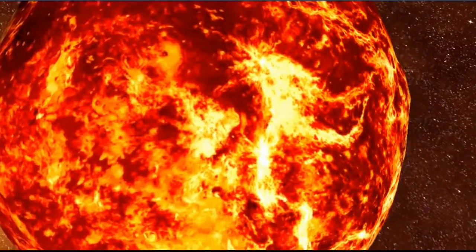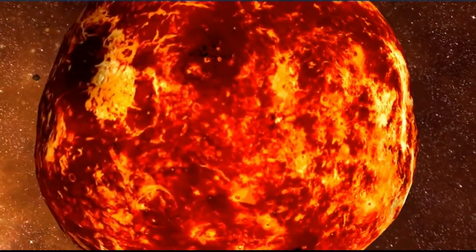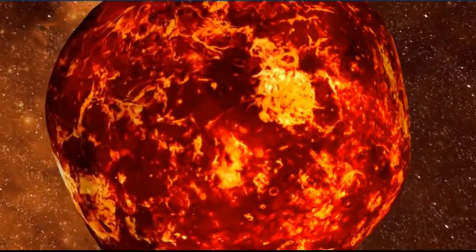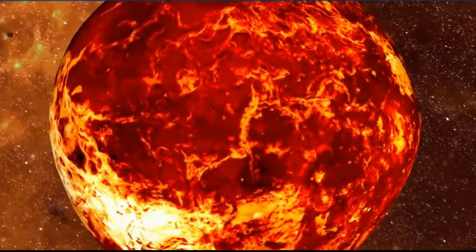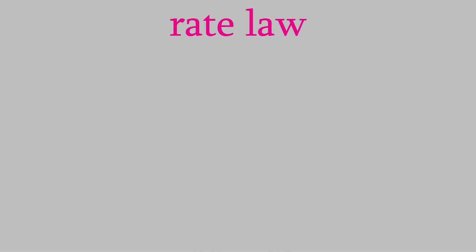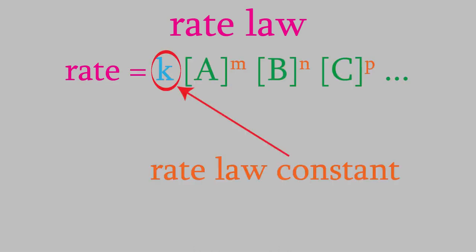It turns out that in order to understand the age of the Earth, we need to understand some of the same ideas we talked about in the last lecture. In that class, we talked about rate laws, and we saw that a rate law is an equation that tells us how the rate of a chemical reaction is connected to the concentrations of the reactants. We saw that every chemical reaction has its own rate law, and they all have the same format: rate equals K, the rate law constant, times the concentration of each reactant, each raised to a power, which is usually an integer.